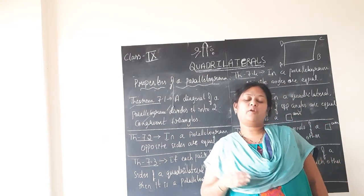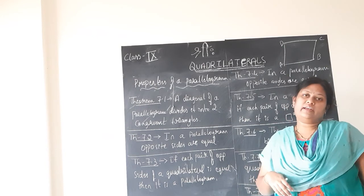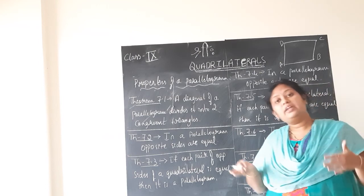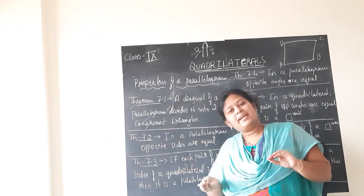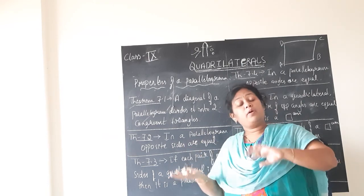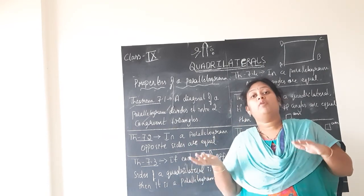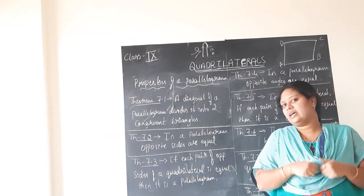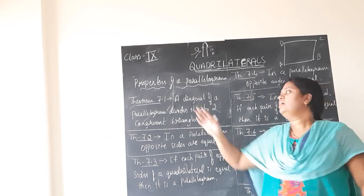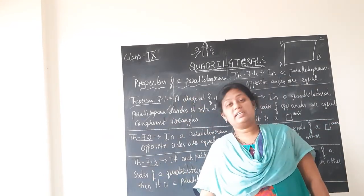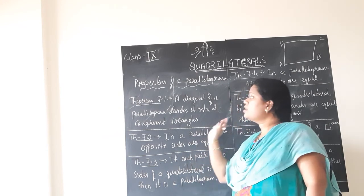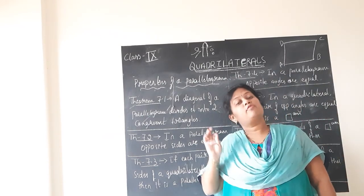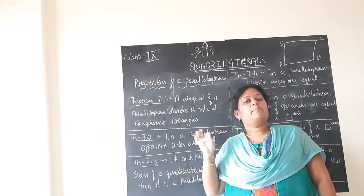We have studied about the parallelogram and its properties already under the heading 'types of quadrilaterals.' Parallelogram is one of the types of a quadrilateral. I also explained what properties a quadrilateral must have to become a parallelogram, a trapezium, a rectangle, a rhombus, or a square. So if you have understood that, then studying these theorems is very easy. Mainly, we are going to study about the properties of parallelogram in this lesson.